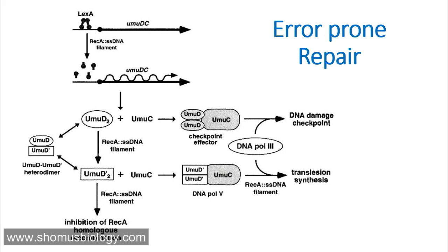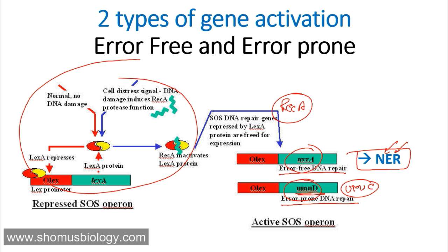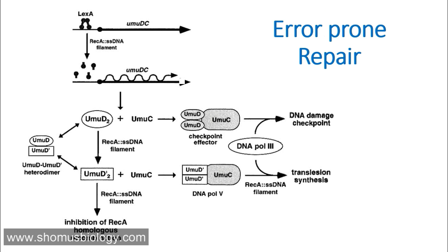What is done by UVRA and UVRB? Those are involved in Nucleotide Excision Repair. If you want to know about Nucleotide Excision Repair in detail, I recommend you watch my video on Nucleotide Excision Repair — the link will be in the description as well as in the playlist. On the other hand, UMUD and UMUC proteins are involved in error-prone DNA repair.